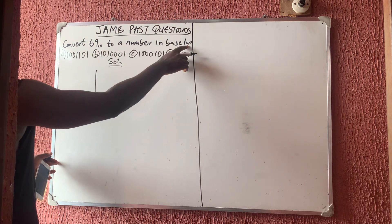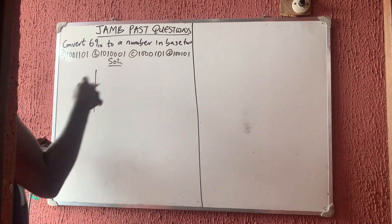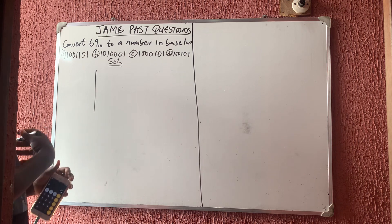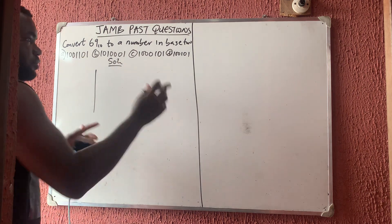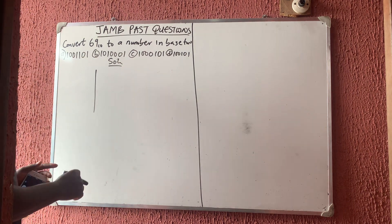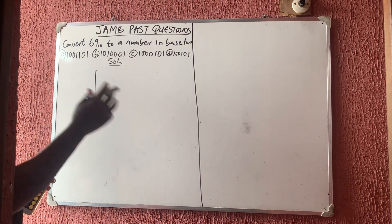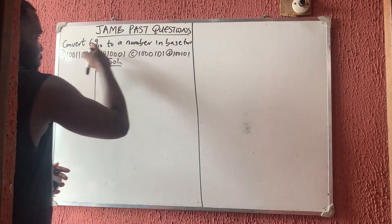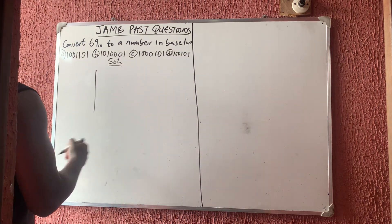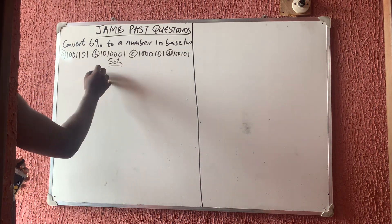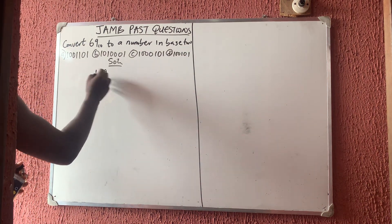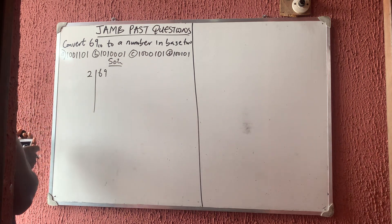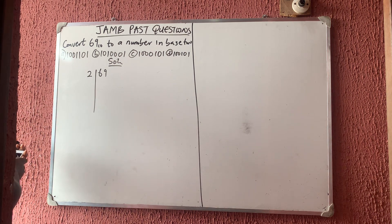Just know that anytime you are moving from the big number to a small number you have to divide, because the big man has money so dividing means he's sharing. But if you are coming from the small number to the big number, you multiply. So I'm having 69, and to divide we have 69 divided by 2.